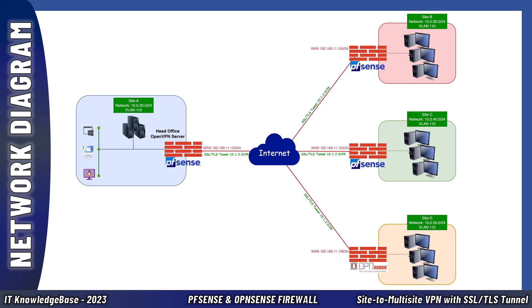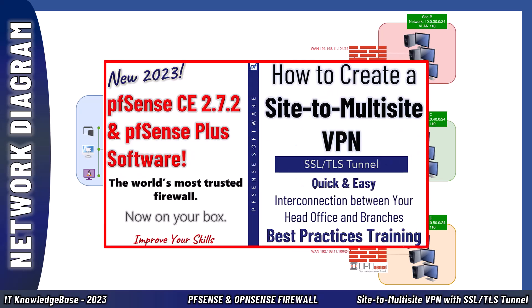I have already completed all the networking setup and just need to generate the required certificates for Site D, then export and copy them to the Site D OPNsense firewall along with the certificate authority, to establish an interconnection between the head office and Site D. We will then verify the VPN tunnel from both sides. I am using pfSense 2.7.2 and OPNsense 23.7, the most updated versions at the time of this recording.